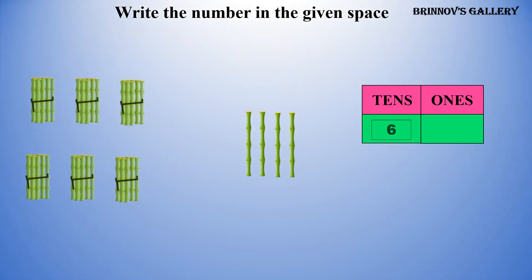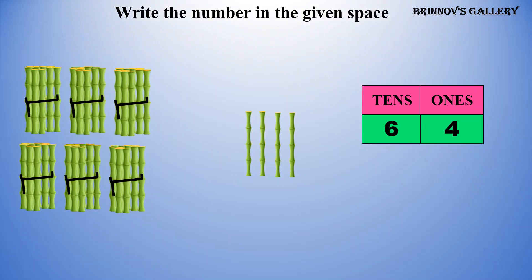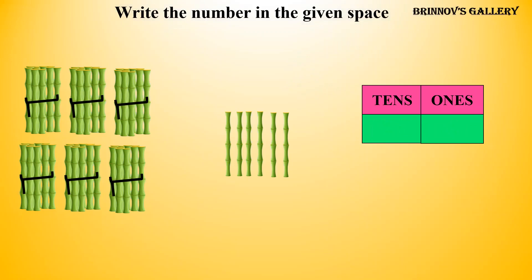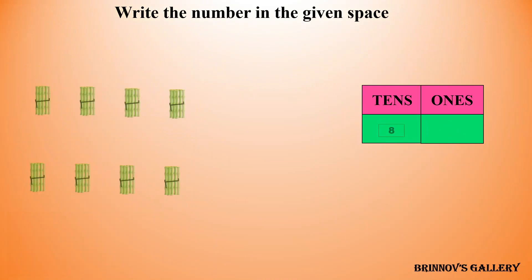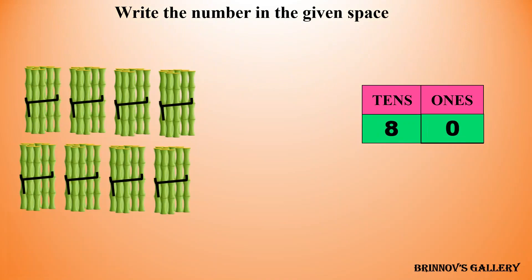Six tens, four ones — the number is 64. Six tens, six ones — the number is 66. Eight tens, zero ones — the number is 80.